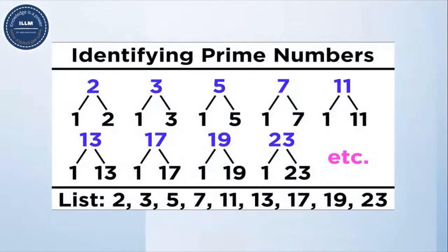Let's have a look at different prime numbers and how we can identify that these numbers are prime — because they are having only two factors: one and itself. Two is also having only two factors: one and itself. Three is having two factors: one and itself. Five is having only two factors: one and itself. Seven is also having two factors: one and itself.